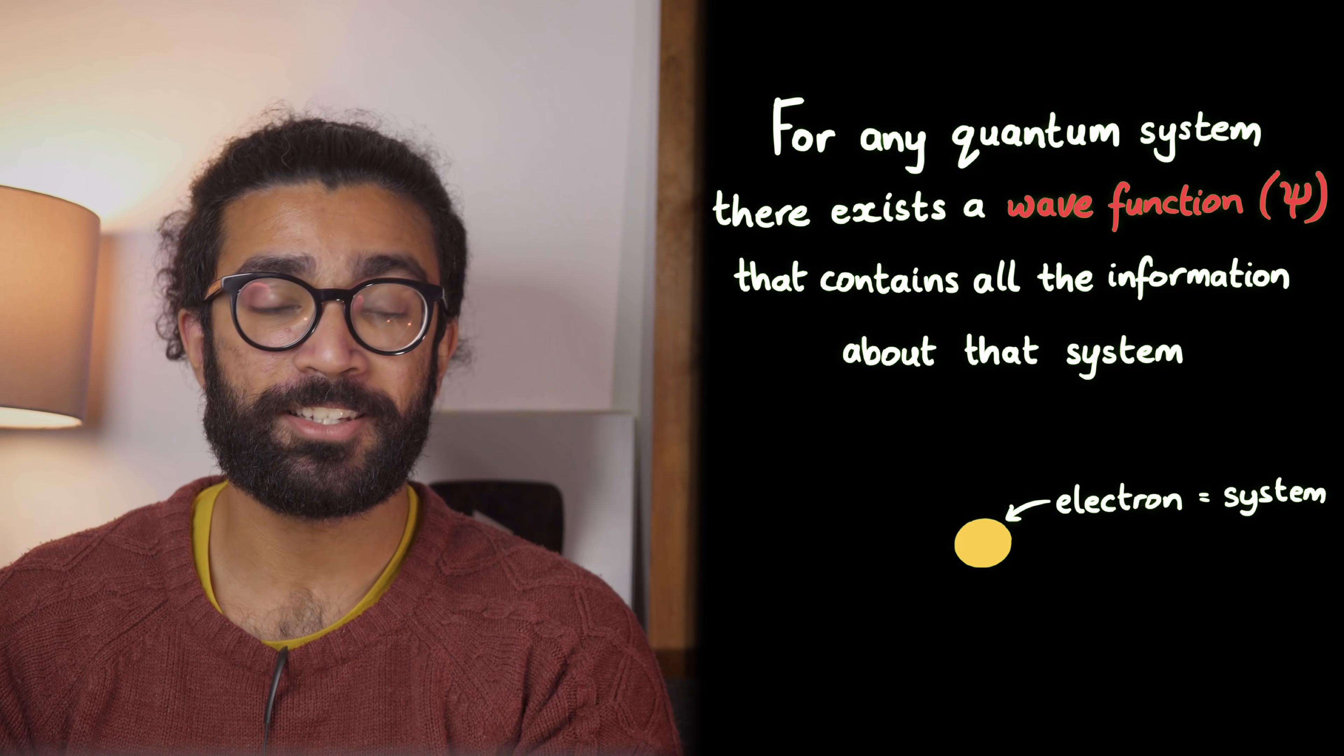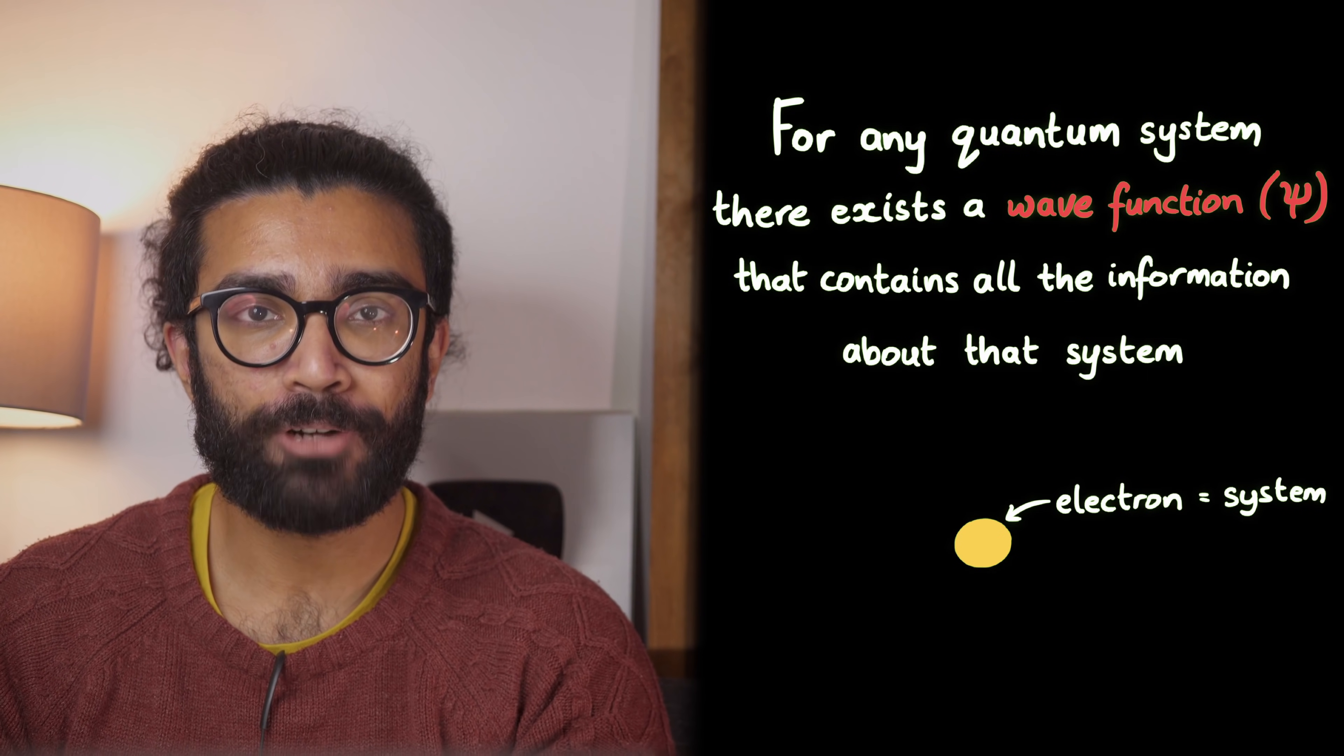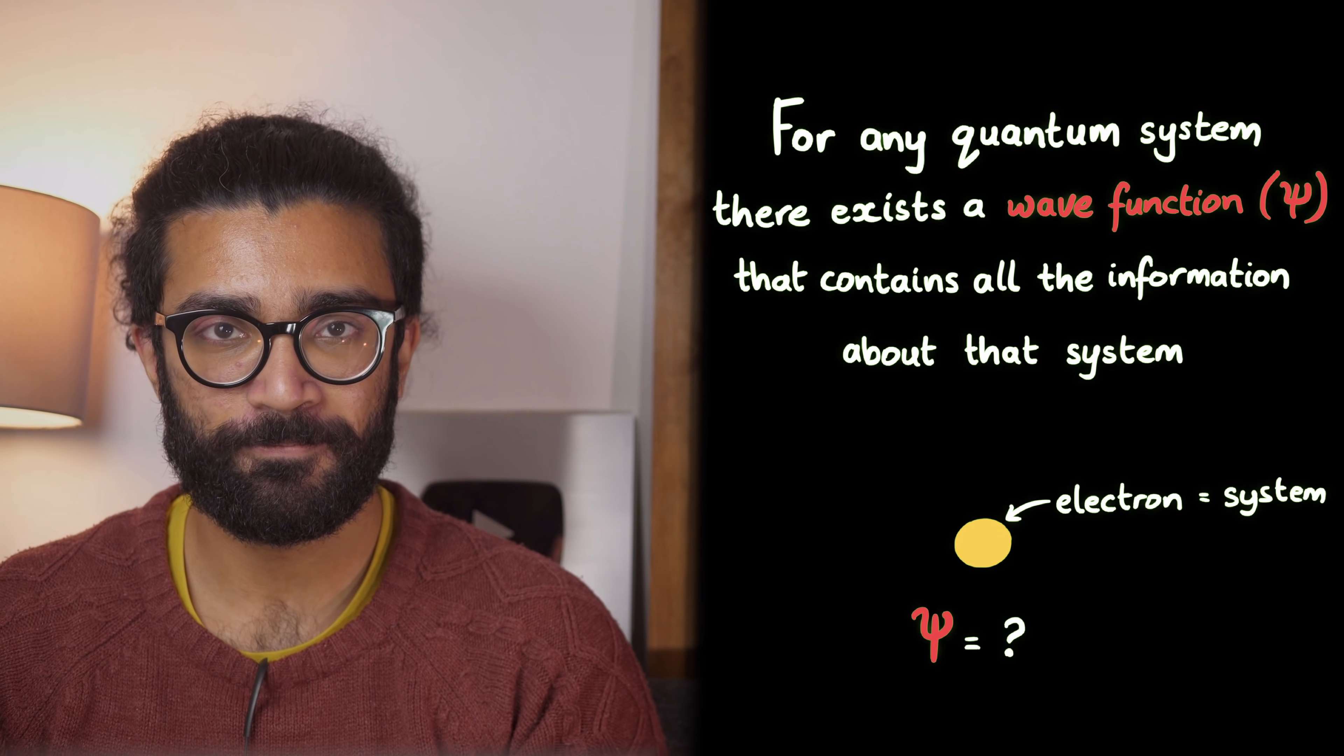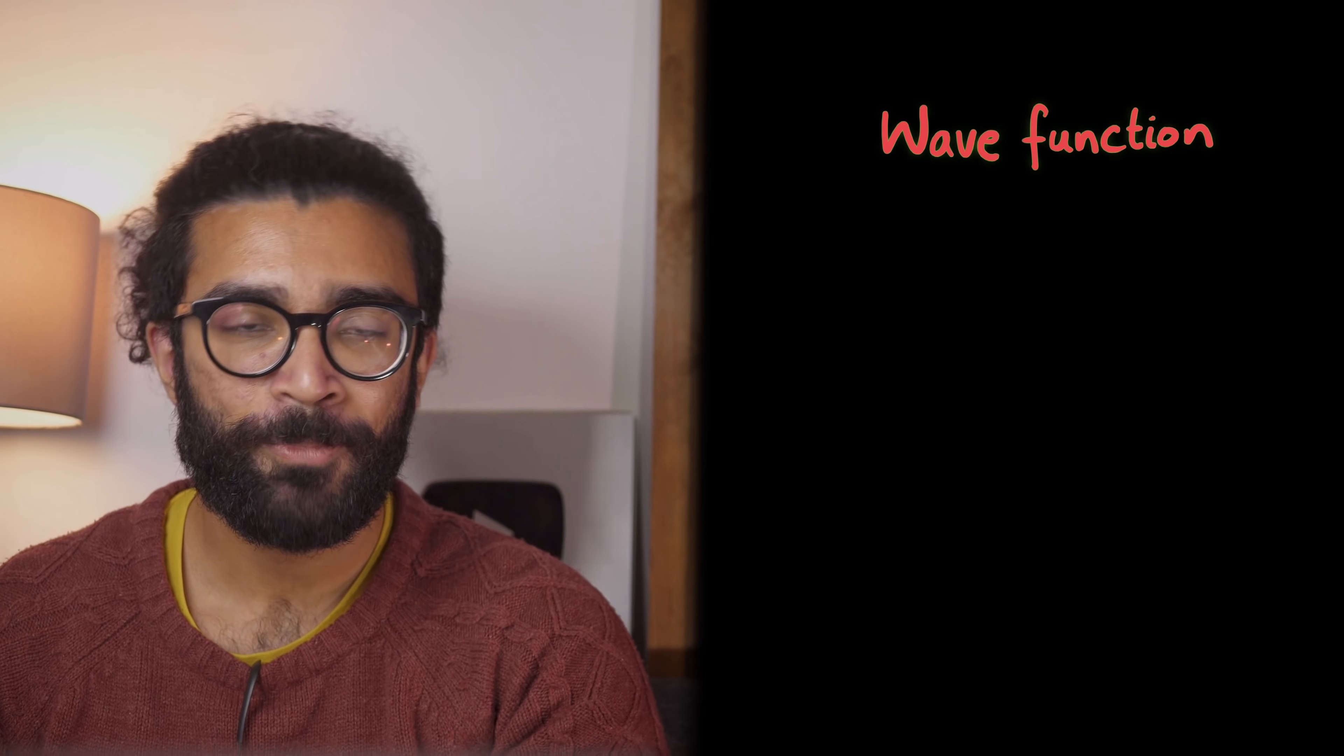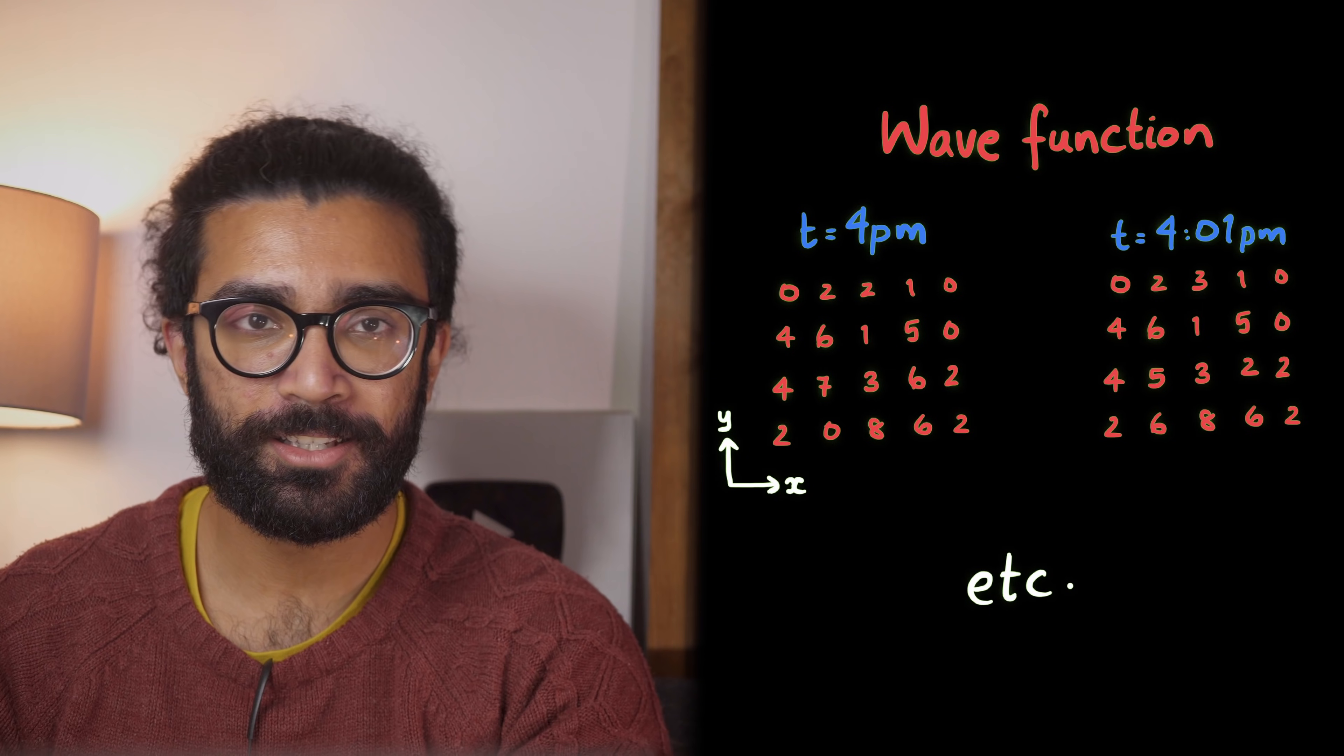So for example, if we're studying a single electron, then this is our system. And directly related to this system is a mathematical quantity known as the wave function. The wave function represents our system, or our electron, because it is meant to have a single value at every point in space and in time.